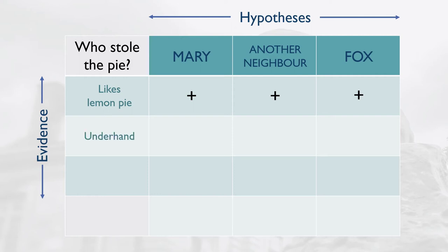The culprit would also have to be underhand. Now this makes Bob think, because although he doesn't like Mary, and it's because she's a little bit strange, it doesn't necessarily mean that she's underhand. And he thinks all his other neighbours are lovely, so they're not underhand either. So it's just the fox who can be a little bit sneaky.